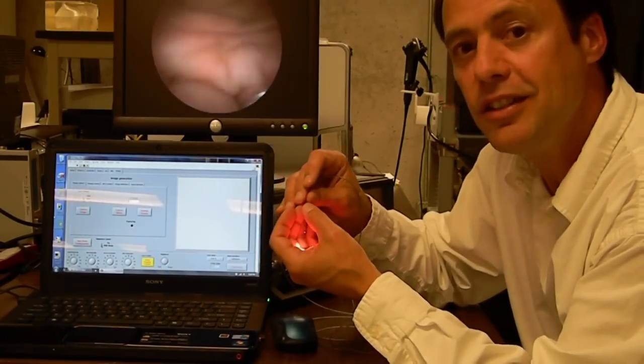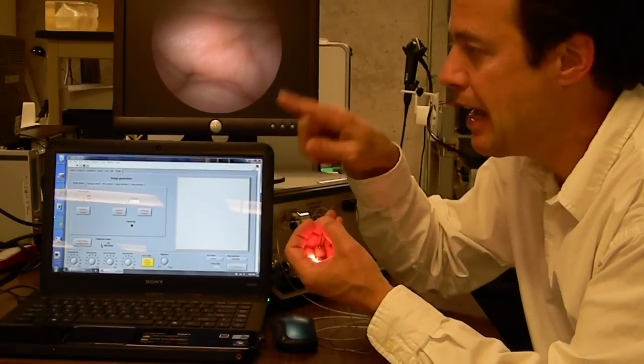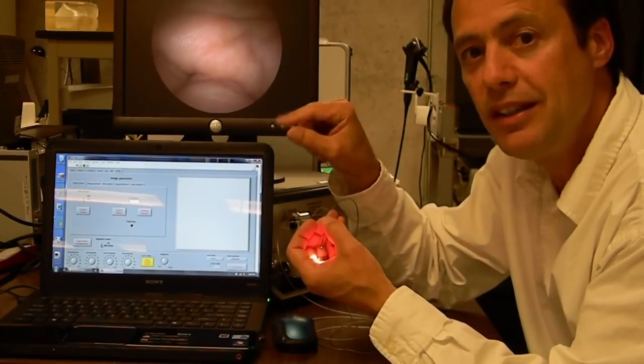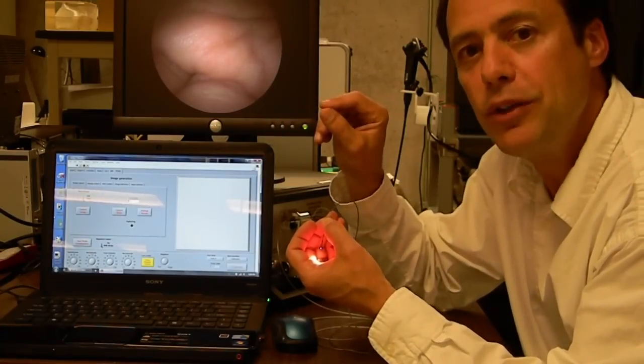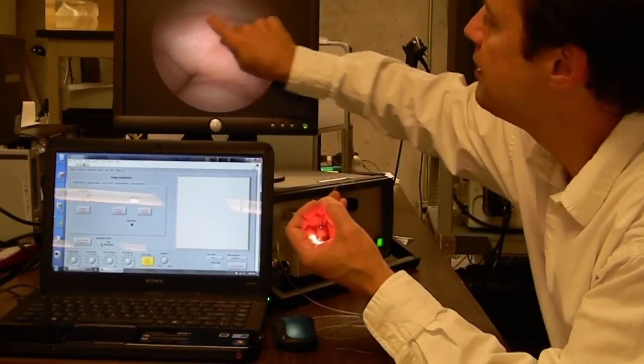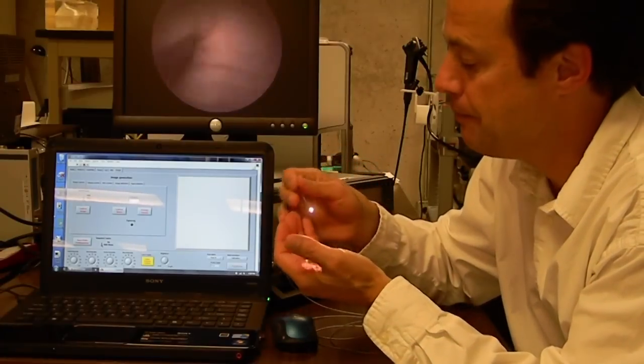Images are formed one pixel at a time at megahertz rates as this illumination fiber is scanned by a piezoelectric actuator at about 12 kilohertz, 12,000 times per second. So it's scanned around 12,000 times per second, forms 30 frames per second images.